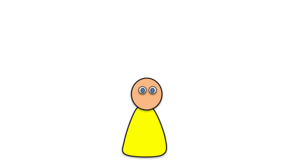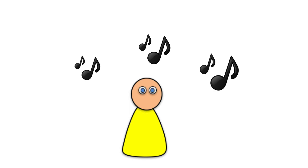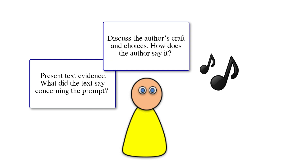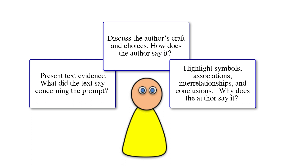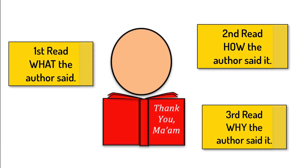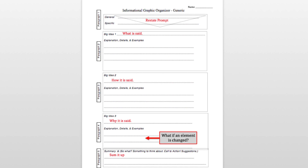An older writer could look at the essay differently. The essay is not a series of paragraphs, but instead a series of three intellectual beats; beats could be comprised of more than one paragraph. The first beat presents text evidence — what did the text say concerning the prompt? The second beat discusses the author's craft and choices — how does the author say it? The third beat highlights symbols, associations, interrelationships, and conclusions — why does the author say it? Often a statement concerning a what-if-one-element-was-changed idea is included: how would changing this element change the character? Describing the effect of changing an element highlights the interrelationship between the elements looked for by the graders. The organization of ideas by the older writer closely resembles the different purposes in the close read. This is what it would look like in the informational graphic organizer.